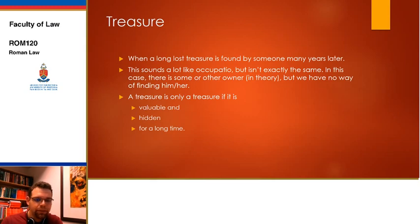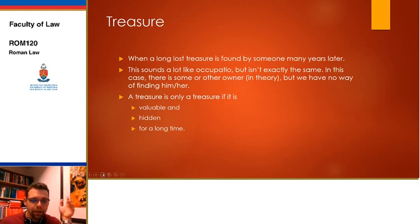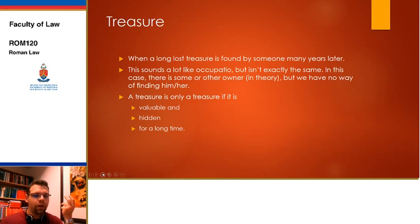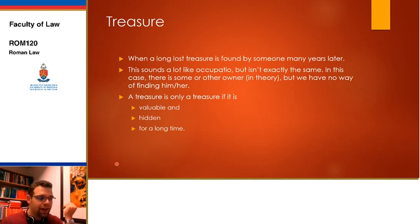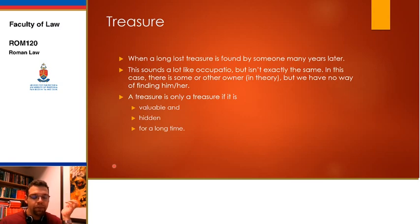A treasure is defined as an object which is valuable — not just scraps of bones or old newspapers. It needs to have been hidden, not in plain sight, and hidden for a long time so that no one knows who the actual owner now is. This was actually surprisingly common in Roman times because people didn't have banks — the best way to keep valuables safe was to stuff them in a chest or clay pot and bury them. So people tilling fields would often stumble upon these treasures.